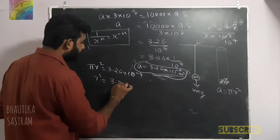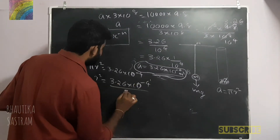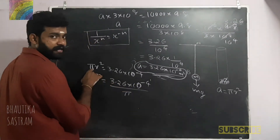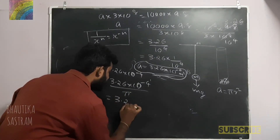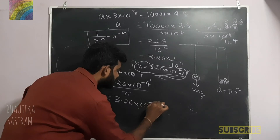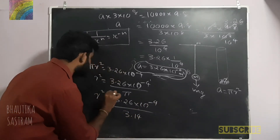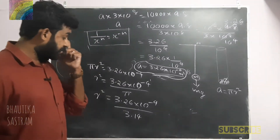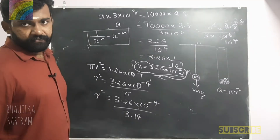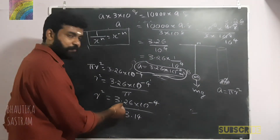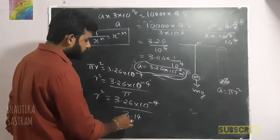Now r² is equal to 3.26 × 10⁻⁴ divided by π. The value of π is 3.14. So r² is equal to 3.26 × 10⁻⁴ divided by 3.14. Since 3.26 and 3.14 are approximately equal, r² is approximately 10⁻⁴.